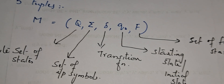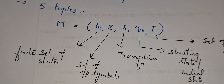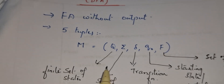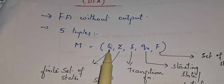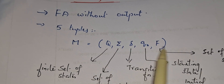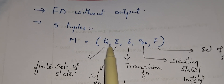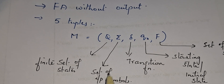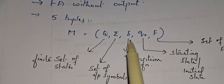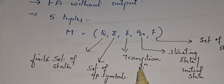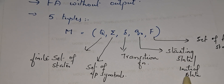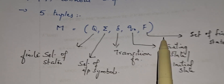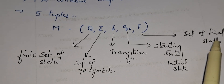There will be one or more final states in a DFA. So a DFA is represented by using five tuples: Q, sigma, del, Q0, F. Q is a finite set of states, sigma is a set of input symbols, del is the transition function, Q0 is the starting or initial state, and F is the set of final states.